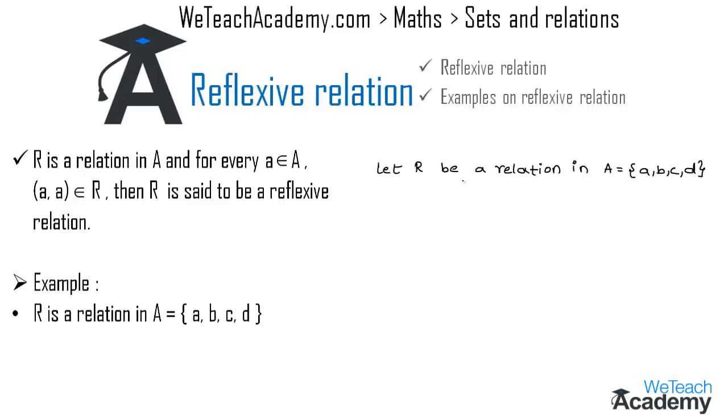So R is a relation in A = {a, b, c, d}. If R is a reflexive relation, then it must contain the ordered pairs (a,a), (b,b), (c,c), and (d,d). In such cases we call R a reflexive relation.